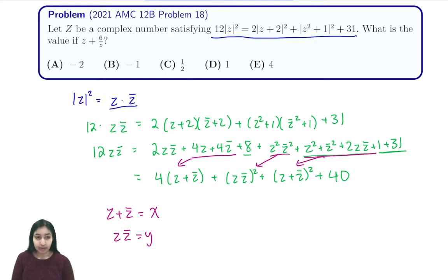We have here that 12y is equal to 4x plus y squared plus x squared plus 40. So we can rearrange the terms of this and we'll see that x squared plus 4x plus 40 plus y squared minus 12y, and this is our expression and we know that this is equal to zero.